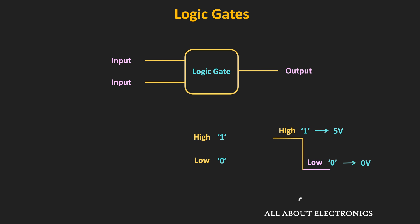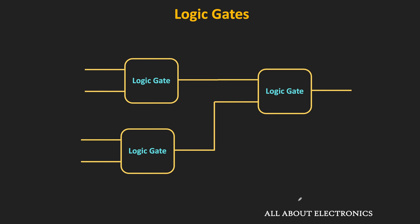In a way, these logic gates have the ability to make certain logical decisions, and since these electronic gates can make a logical decision, they are known as logic gates. When we interconnect or cascade these logic gates, it is possible to perform various logical operations, and using these logic gates it is even possible to build a processor.